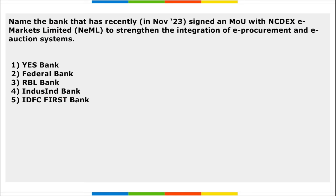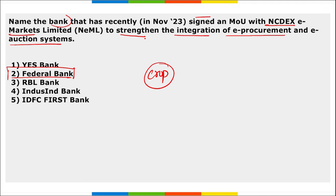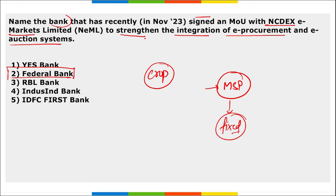Next: name the bank that has recently signed an MOU with NCDEX eMarkets Limited to strengthen the integration of e-procurement and e-auction systems. It is Federal Bank. Under this initiative, farmers list their crop details on the e-procurement solution for e-auction purposes, with the government purchasing them at the Minimum Support Price (MSP). This will help farmers ensure a guaranteed fixed income for their crops.